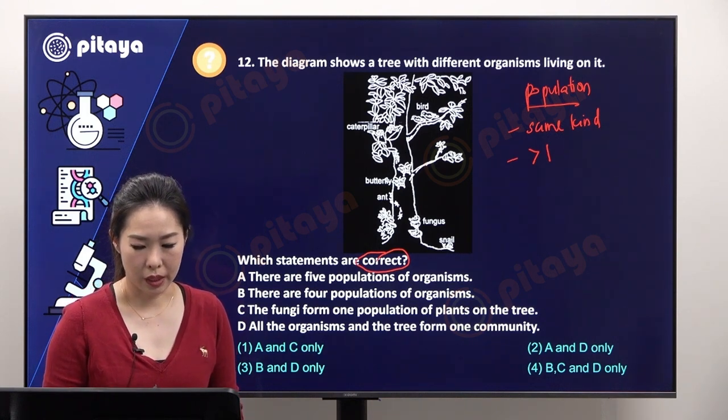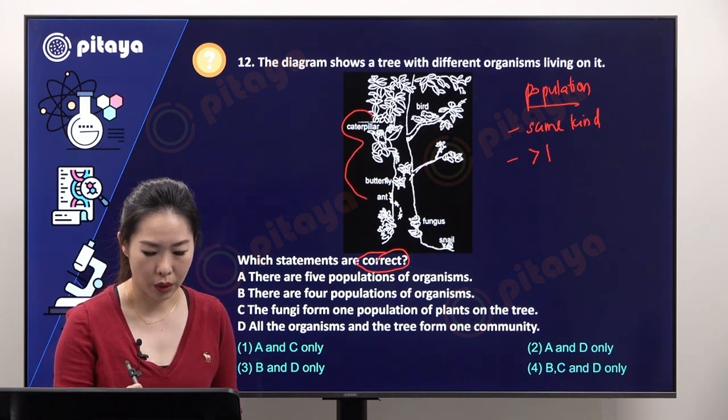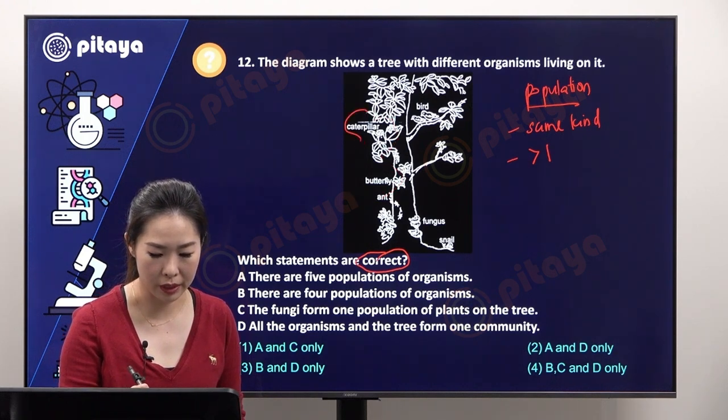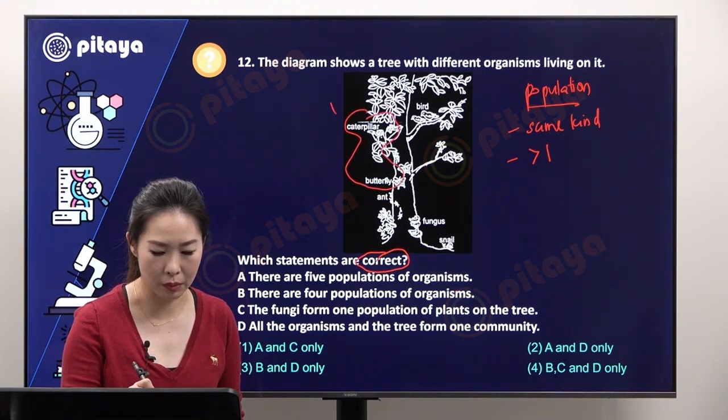Let's see how many we have. Caterpillar and butterfly, these two are of the same species, same kind, same type. So we should group them together.